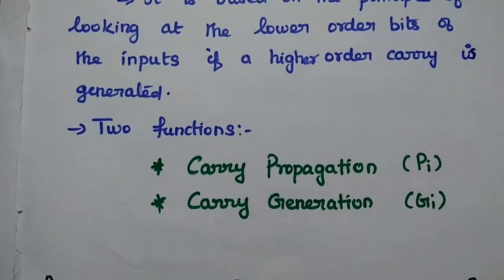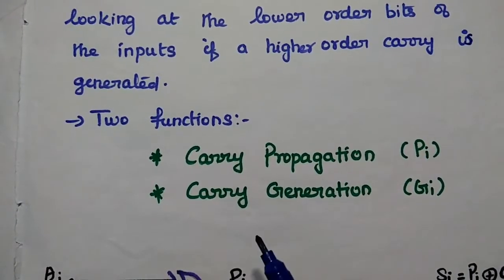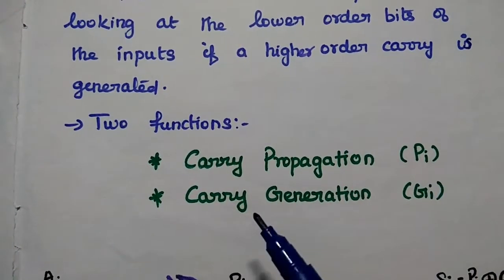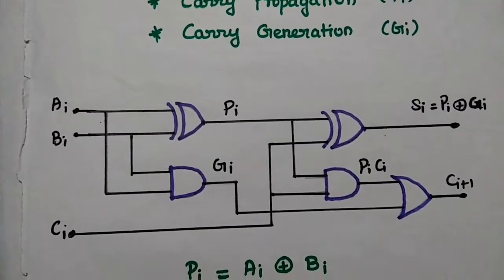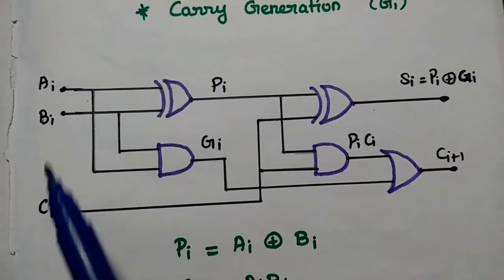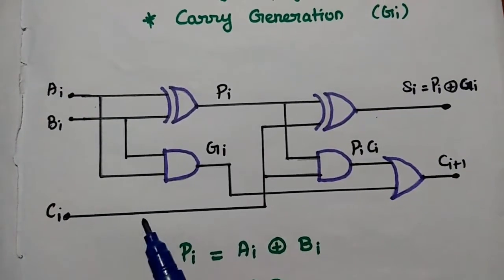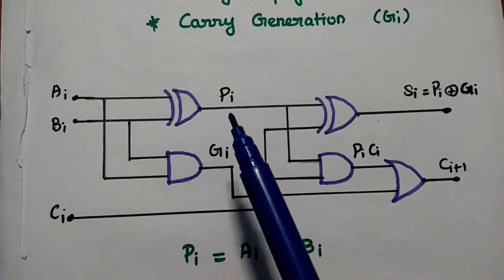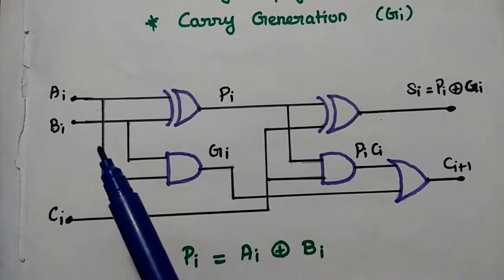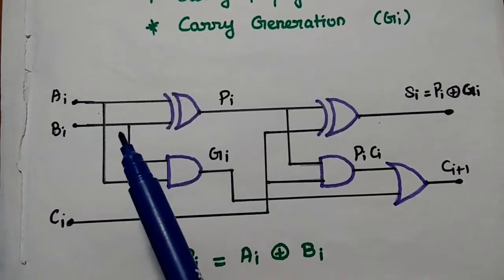Two carry-related functions are involved in the carry lookahead adder. One is carry propagation, and the next one is carry generation. Carry propagation is denoted as Pi, and carry generation is denoted as Gi. This is the full adder logic diagram where there are three inputs: Ai, Bi, and Ci, where i represents the ith term of the full adder in a parallel binary adder. Carry propagation is the XOR between Ai and Bi.